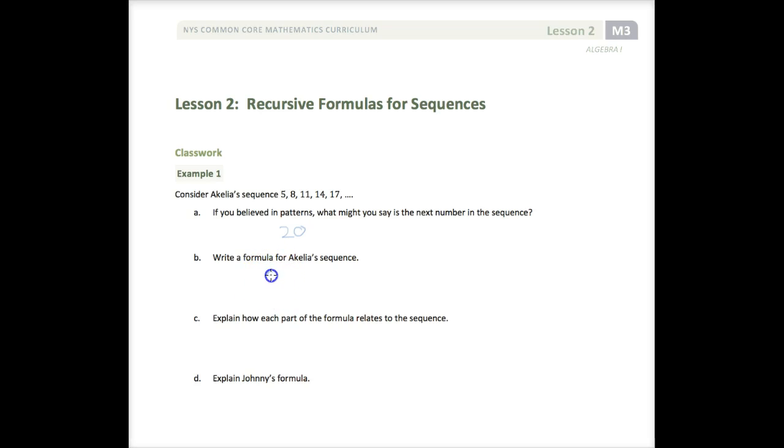Write a formula for Achilles Sequence. Well, we know that our sequence starts at 5. And what happens is we add 3 for each step. So we say n minus 1 to tell us how many times to add 3 once we get past the initial step. And then this would be our a sub n.